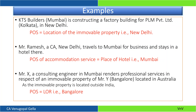Examples: KTS Builders in Mumbai is constructing a factory for PLM Pvt Ltd in Kolkata, but the factory is being built in Delhi — place of supply is New Delhi, not Kolkata. A chartered accountant from New Delhi travels to Bombay for business and stays in a hotel — place of supply is Maharashtra. A consulting engineer in Mumbai renders professional services for a property coming up in Australia, contracted by a client in Bangalore — place of supply is Karnataka (location of recipient).